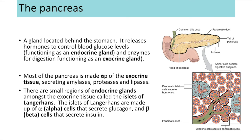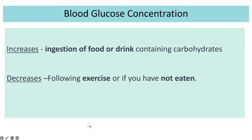Next, the control of blood glucose concentrations. The pancreas is a gland behind the stomach that releases hormones to control blood glucose levels, making it an endocrine gland. It also secretes enzymes for digestion, making it an exocrine gland too. Most of the pancreas is exocrine tissue releasing amylases, proteases and lipases, but there is a small region of endocrine tissue called the islets of Langerhans, which contain alpha cells secreting glucagon and beta cells secreting insulin.